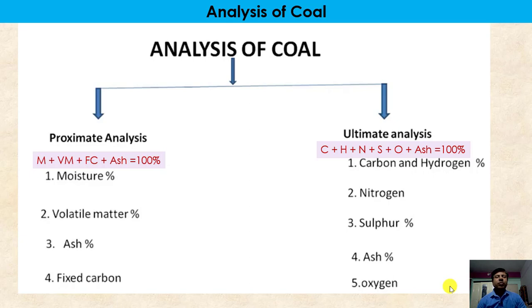There are two types of methods for analysis of coal: proximate analysis and ultimate analysis. In the proximate analysis, moisture, volatile matter, fixed carbon, and ash are determined.